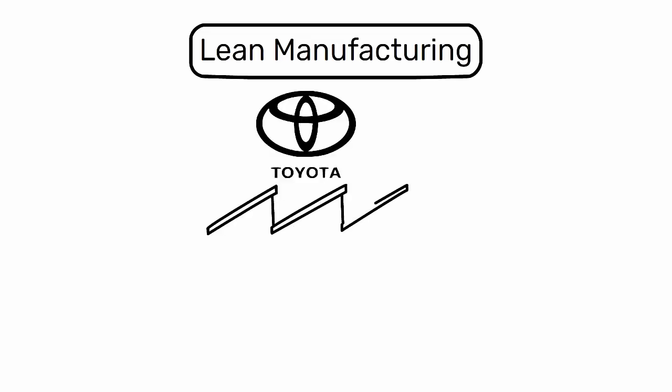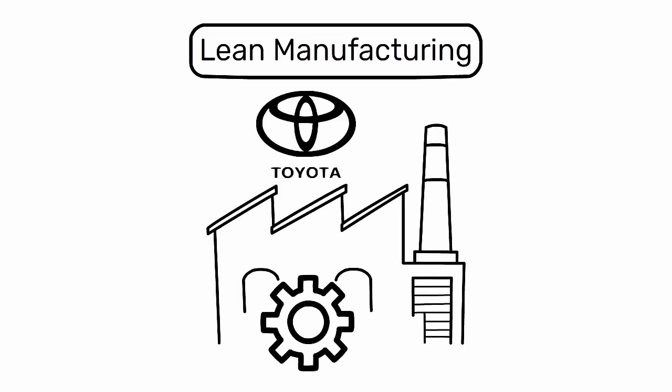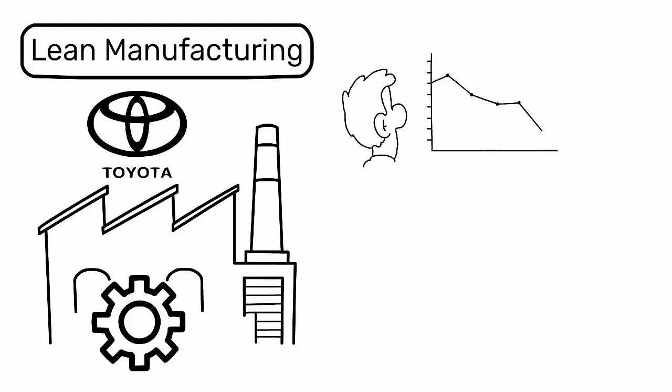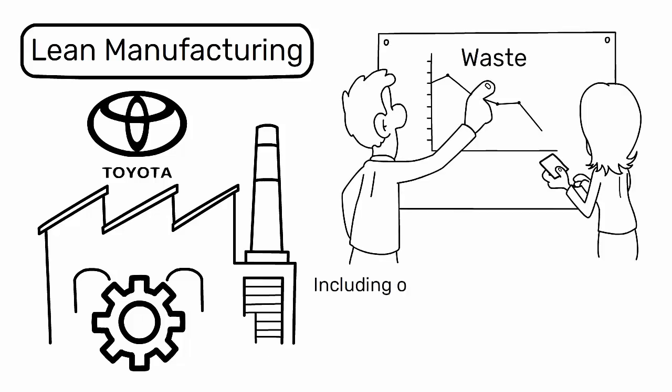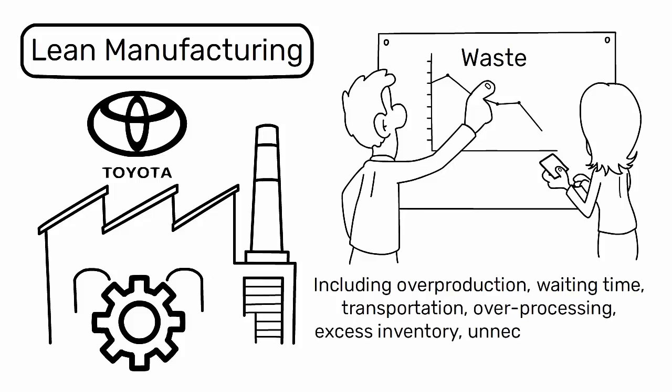Lean Manufacturing, derived from the Toyota Production System (TPS), primarily focuses on the elimination of waste in all forms, including overproduction, waiting time, transportation, overprocessing, excess inventory, unnecessary motion, and defects.